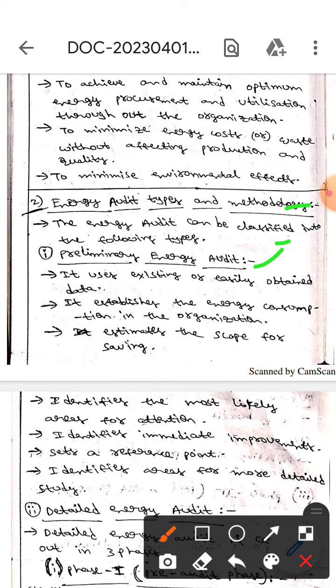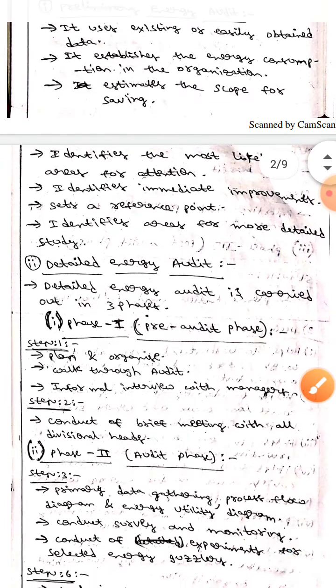Preliminary energy audit uses existing and easily obtained data. It establishes the energy consumption in the organization, estimates the scope for saving, and identifies the most likely areas for retention. It identifies immediate improvements, sets a reference point, and identifies areas for more detailed study.